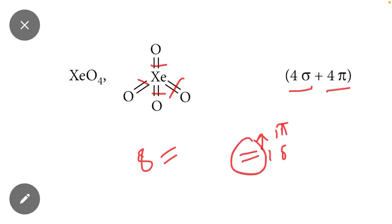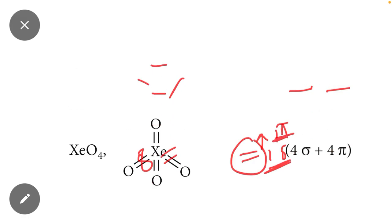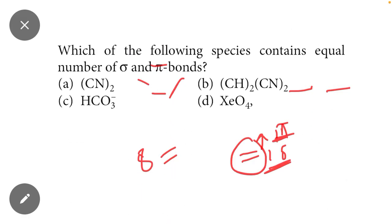Here you can see that there are four double bonds, it means four sigma and four pi bonds are present. The question is which molecule contains equal number of sigma and pi bonds, it means the option D of this question is the correct option.